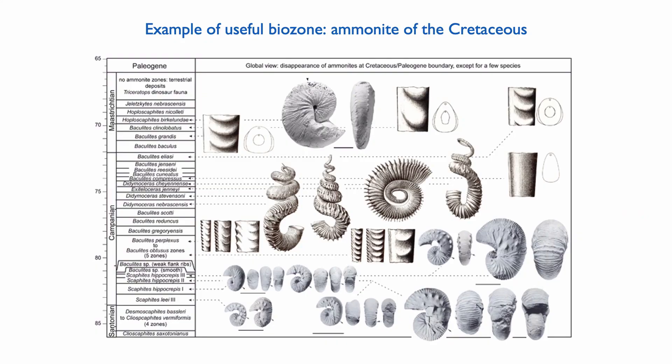Ammonites, for instance, are excellent free swimmers in the Mesozoic. They tend to form really good index fossils because they evolve their shape very rapidly. They are relatively short-lived in each particular shape, and they reproduce a lot, so you find a lot of ammonites — it's not a rare fossil.